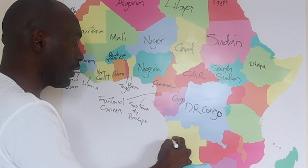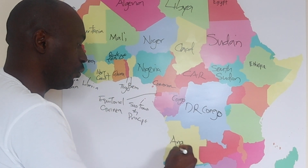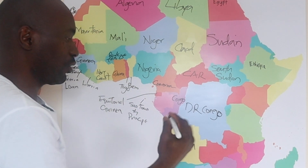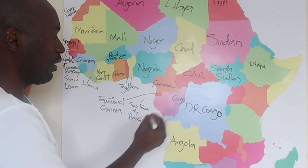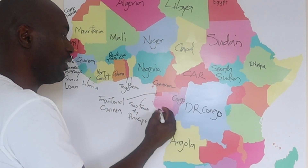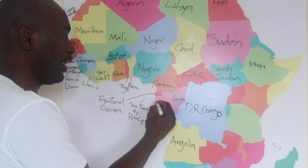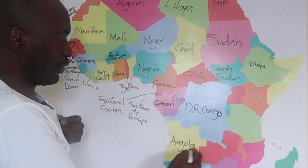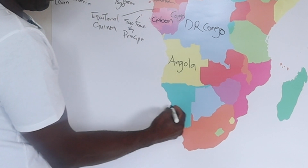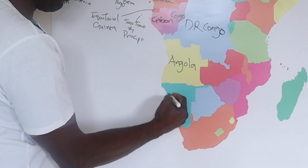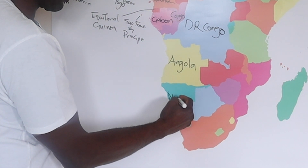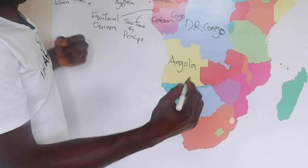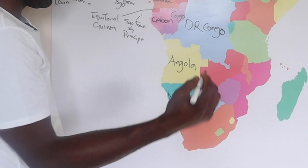And then we have Angola, one of the most resource-rich African countries. And then here there is Gabon, just right down there. And here we have Namibia, one of the African countries that has vast land but really very low population — very low population density.